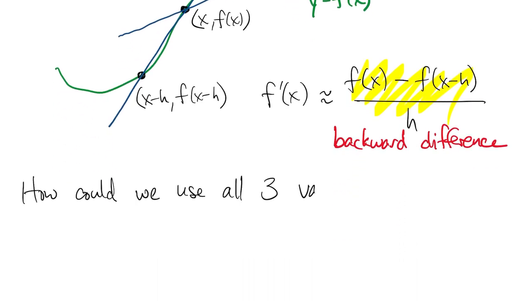Now, how could we use the values at all three points simultaneously? The obvious answer is interpolation. Let's set x equal to zero for simplicity.